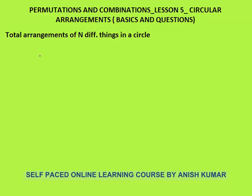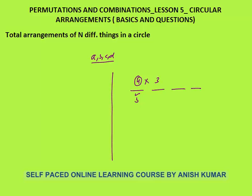Total arrangement of n different things in a circle — that is the first question. Let me say that I want to arrange A, B, C and D. This first place can be filled in 4 ways. Let's say B came here. The remaining second place can be filled with remaining 3 letters. Let's say D came here. The third place can be filled in 2 ways and the last in 1 way. So 4 factorial was my answer.